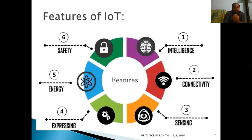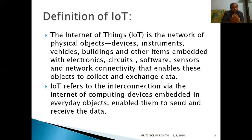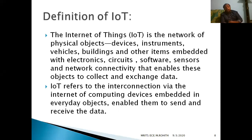These are a few features of IoT. Coming towards the definition: the Internet of Things is a network of physical objects. What could be the physical objects? It could be a device, an instrument, a vehicle, a building, or anything. It could be any sort of embedded or electronic circuit within. That is what IoT is about.